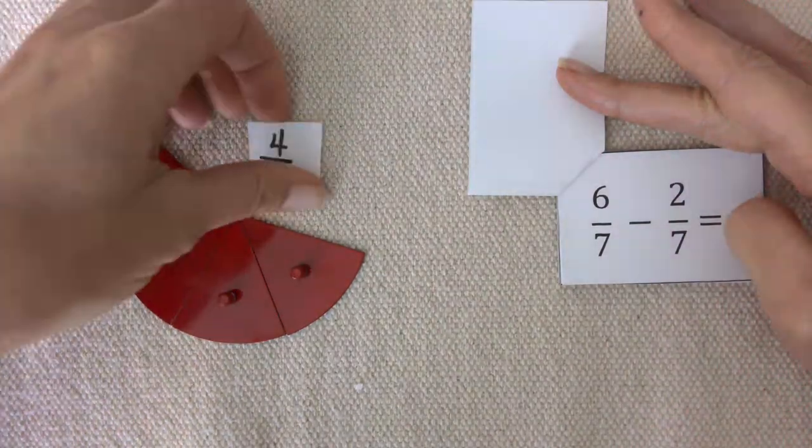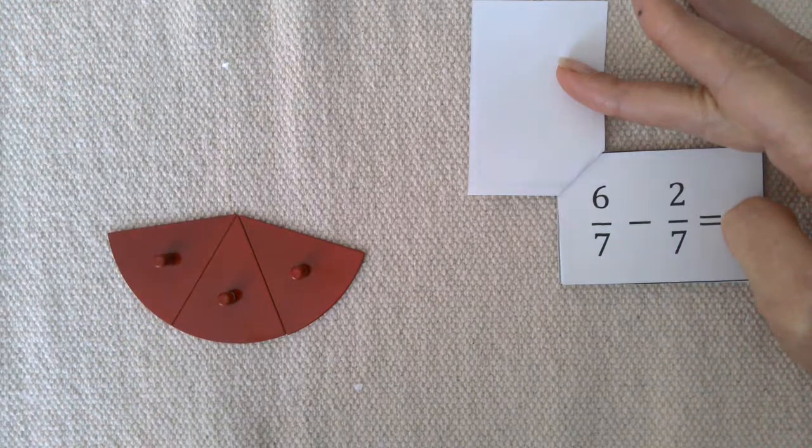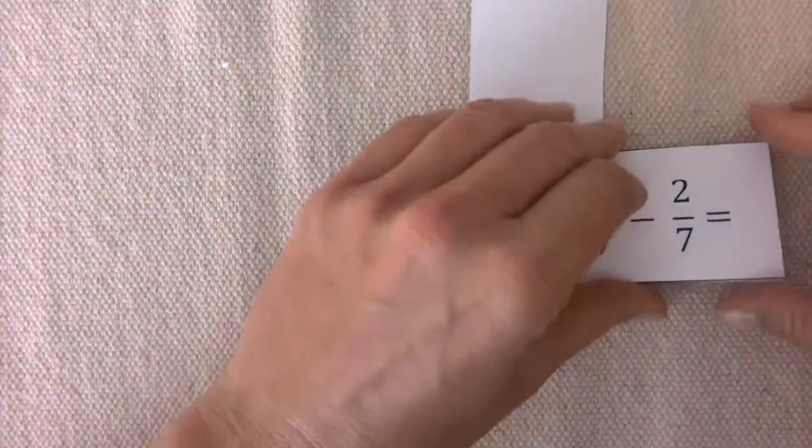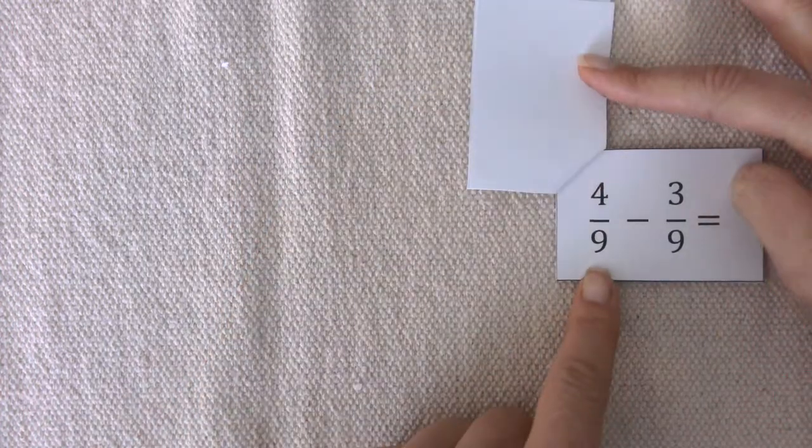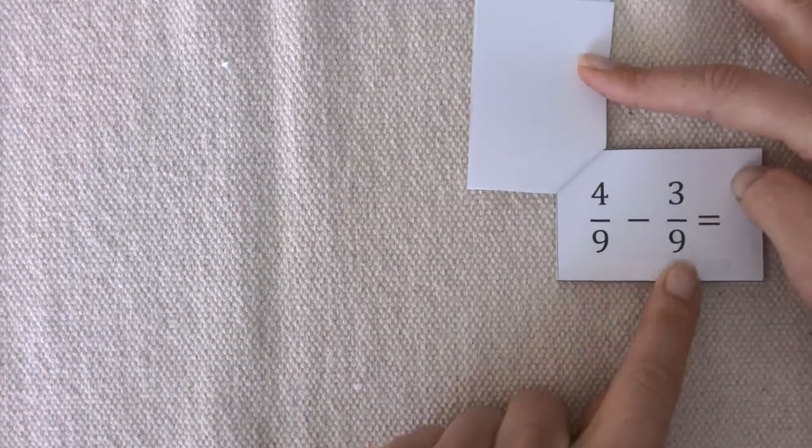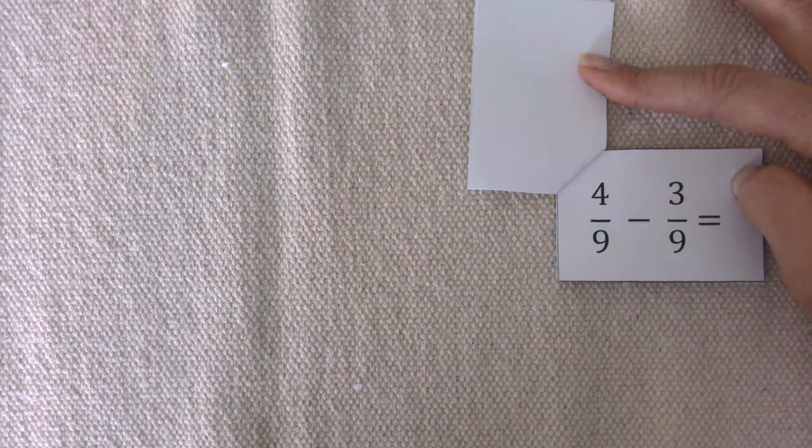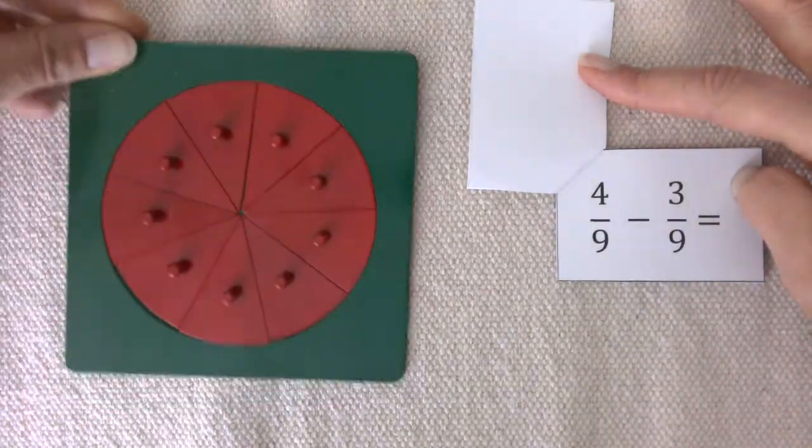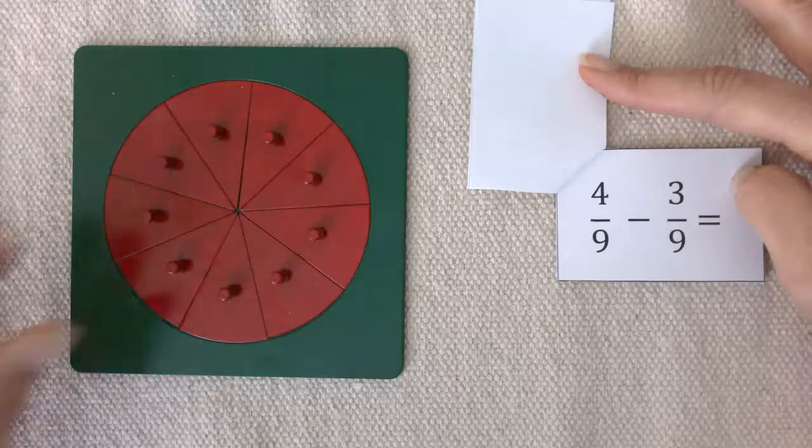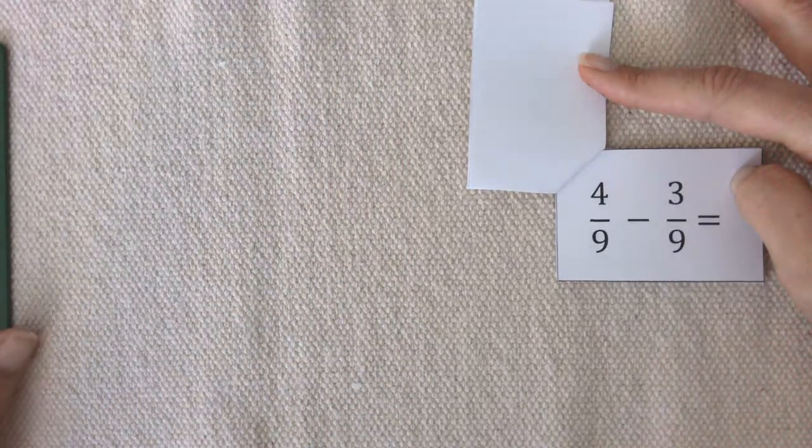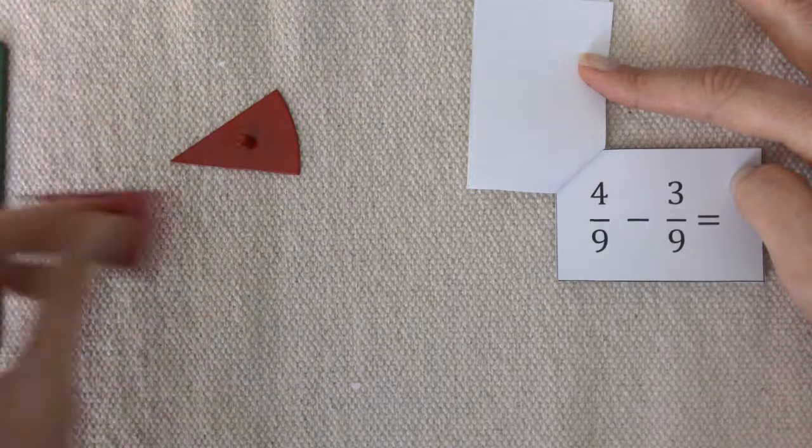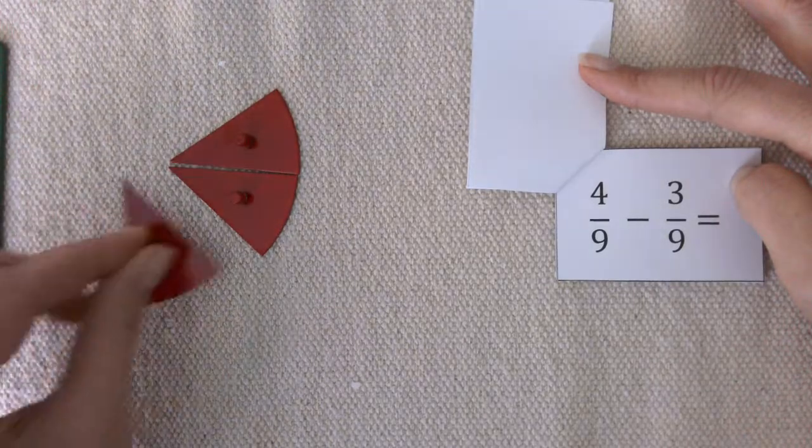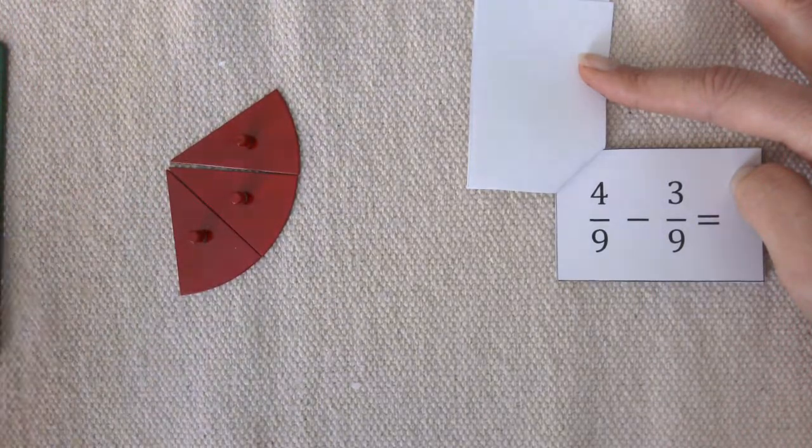Let's do another example. This time we have 4 9ths minus 3 9ths. Here's my 9th tray. And how many of them do I need? That's right, 4. 1, 2, 3, 4.